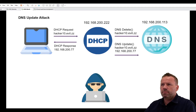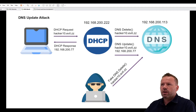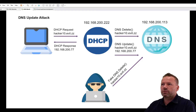Using Scapy, one can now fake the source IP address 200.222 and send such fake DNS deletions. So first, what an attacker would do is send a fake DNS deletion for hacker10.evil.zz with the source IP address 200.222 — forging the source IP address of the DHCP server.